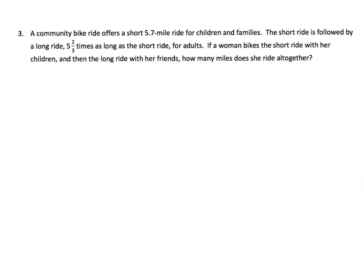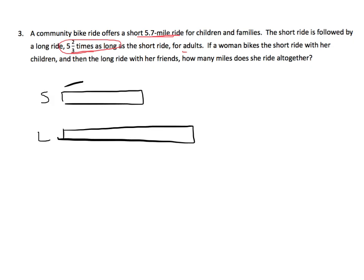In this one, it says, a community bike ride offers a short 5 and 7 tenths mile ride for children and families. The short ride is followed by a long ride 5 and 2 thirds times as long as the short ride for adults. If a woman bikes the short ride with her children and then the long ride with her friends, how many miles does she ride all together?